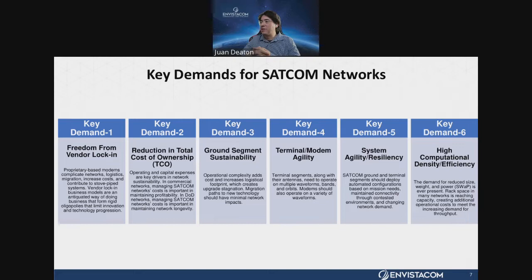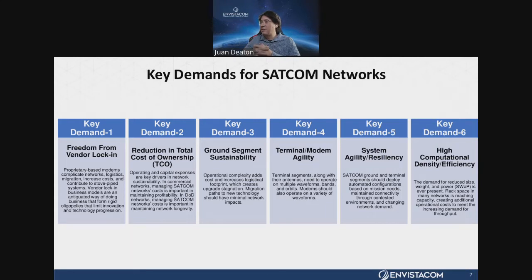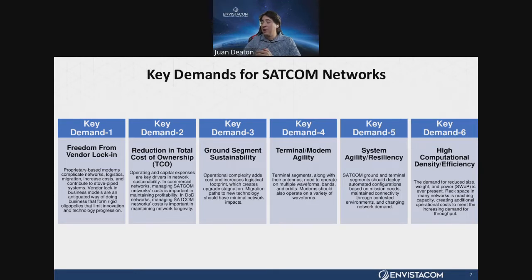The fifth key demand is system agility or resiliency — the ability for a SATCOM system, including the ground and terminal segments, to be automated so we can deploy configurations and modify those configurations based on changing network demand. The final key demand is high computational density and efficiency. This is an ever-growing requirement from the DoD to do more with less space, and this has great attributes for the DoD and for commercial SATCOM networks whose gateways are running out of rack space.